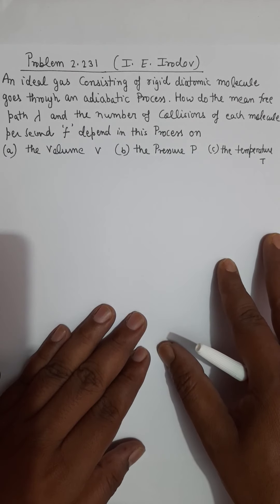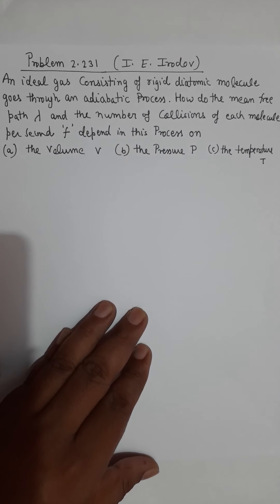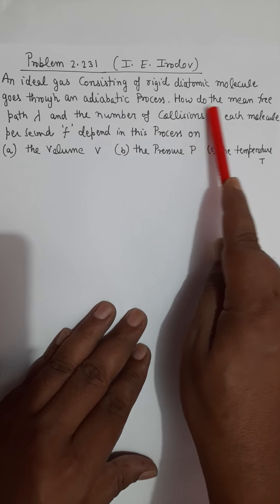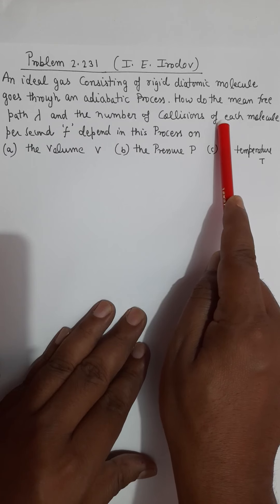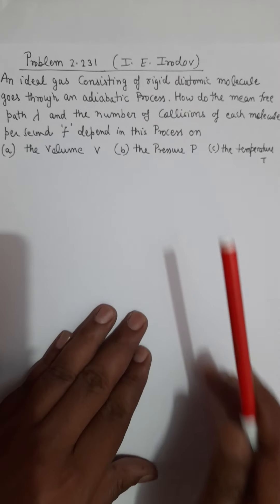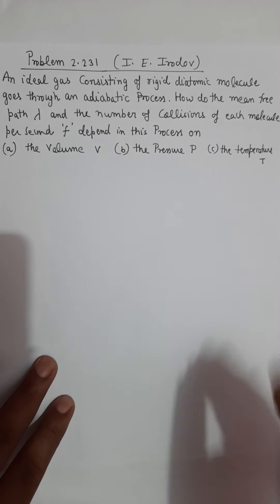Hello students, from heat and thermodynamics topic, this is again a very important question, useful for JEE Main especially. The topic is mean free path and collision frequency. The question is: how does mean free path and the number of collisions of each molecule per second depend on the adiabatic process — specifically on volume, pressure, and temperature? This is a simple but probable question for JEE Main 2020 and other exams.